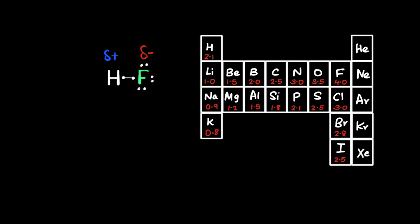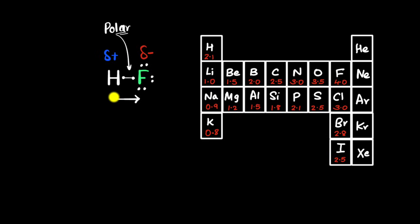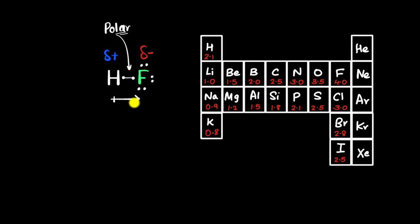We call this a polar bond. Another way to represent it is by drawing an arrow in the direction the electrons are being pulled, with a plus sign on the other end representing partial positive. As a result, this molecule itself is polar — meaning the charges are unevenly distributed — because the shared electrons spend more time near fluorine than near hydrogen.